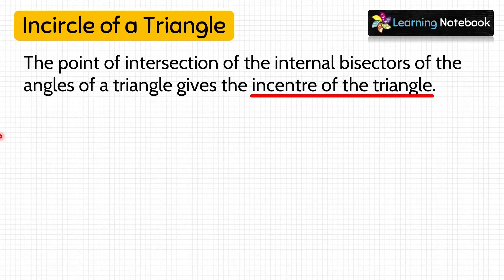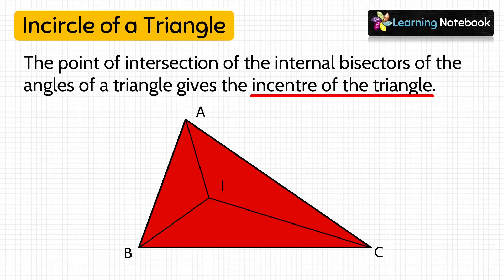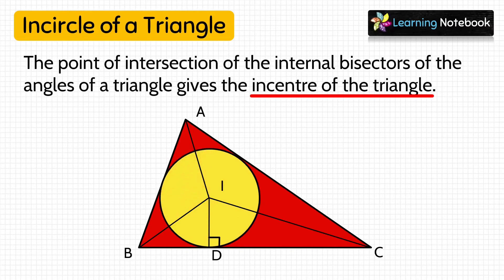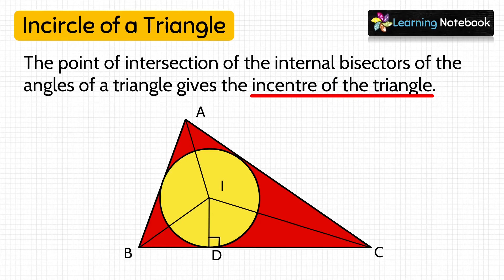To understand this, let's draw a triangle and name it ABC. Now let the internal bisector of its three angles A, B, and C meet at a point called I. So this point I is the incenter of triangle ABC. To make the incircle of this triangle, we will draw a perpendicular from I on side BC. Next, we will take I as center and ID as radius, and draw the incircle of triangle ABC.